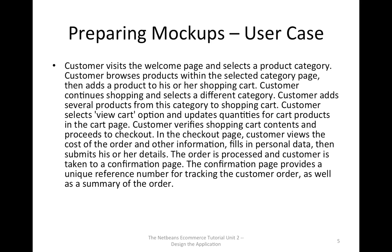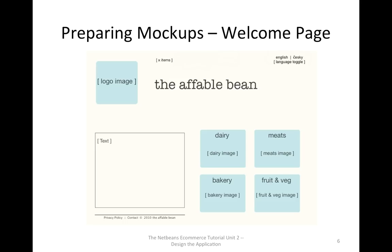From these use cases, we know we need to build the following web pages. First, the welcome page. The welcome page is the website homepage and the entry point for the application. It introduces the business and services to the user and enables the user to navigate to any of the four product categories. For example, if the user clicks on dairy, they will be taken to the category page for dairy products.